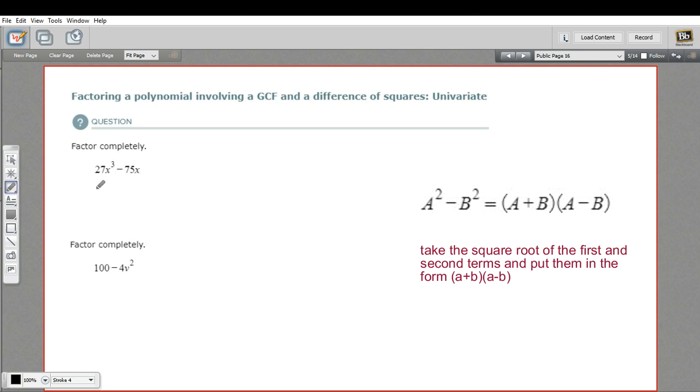In this case, I could take out an X for sure from each of these. And let's see, they're also both divisible by three. So let's try that. Let's take out three X. So 27X cubed divided by 3X would leave 9X squared. That's looking promising. And then 75X divided by 3X would be 25.